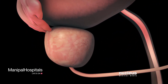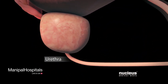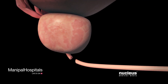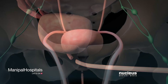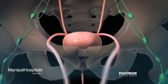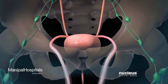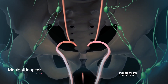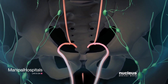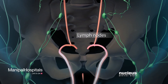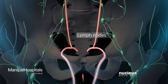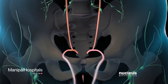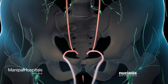Then your surgeon will cut your urethra just beneath your prostate. These cuts free your bladder and prostate so they can be removed. Lymph nodes near your bladder and prostate will also be removed to determine if your cancer has spread.